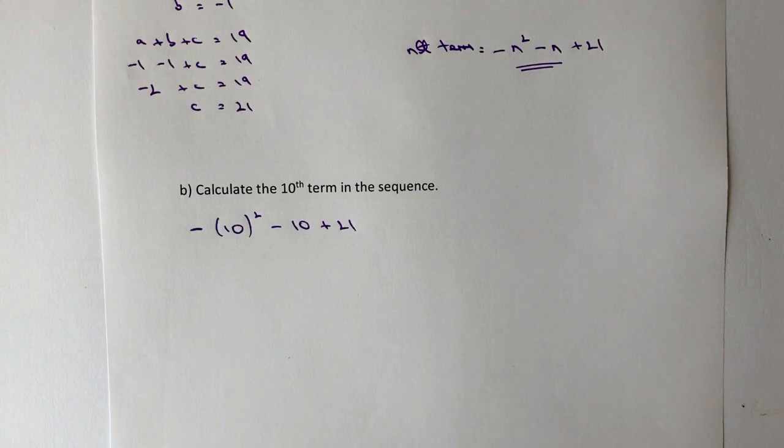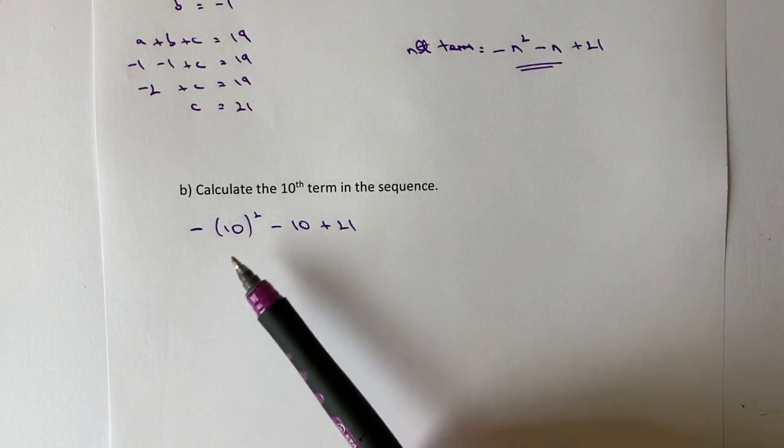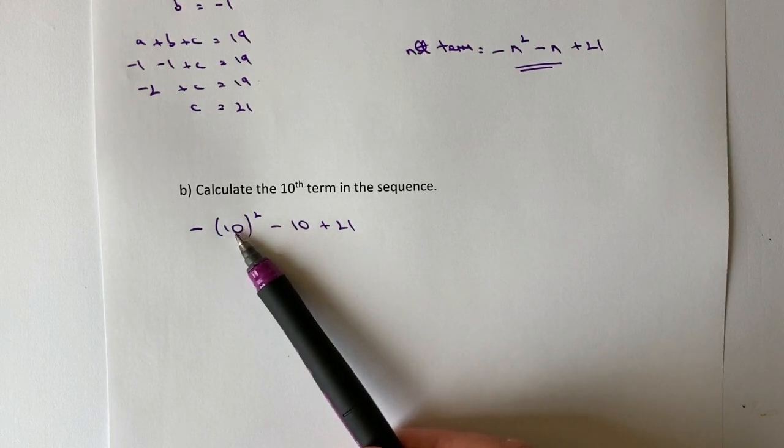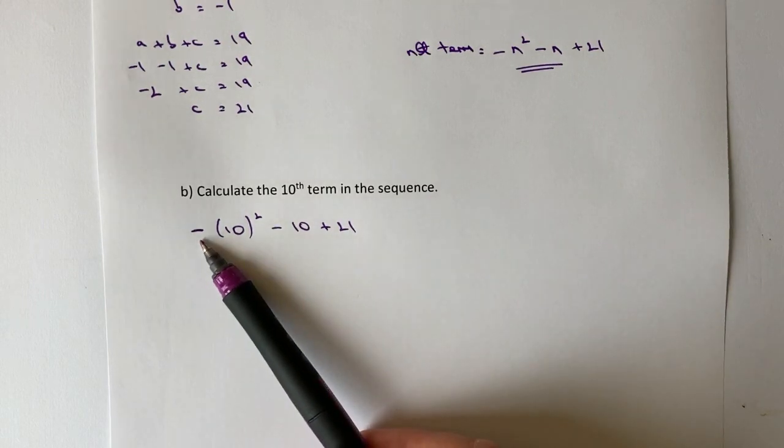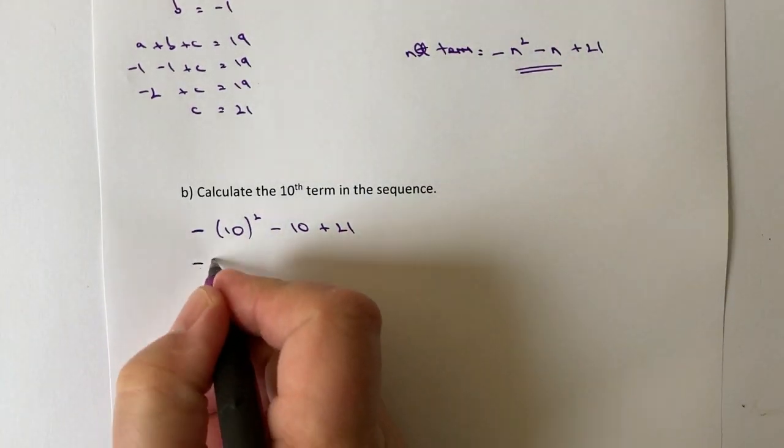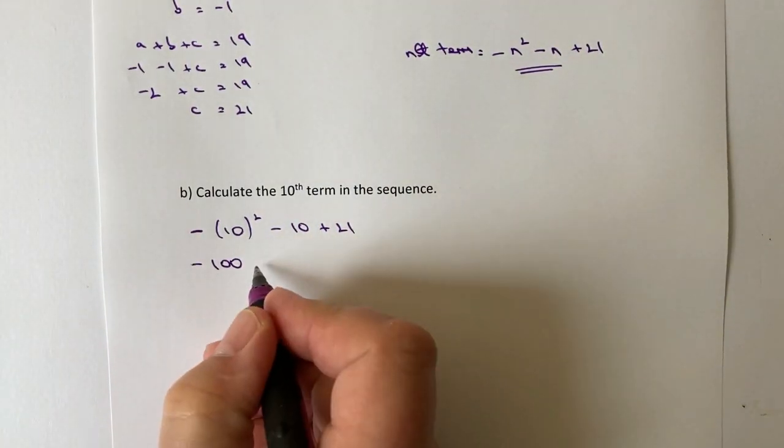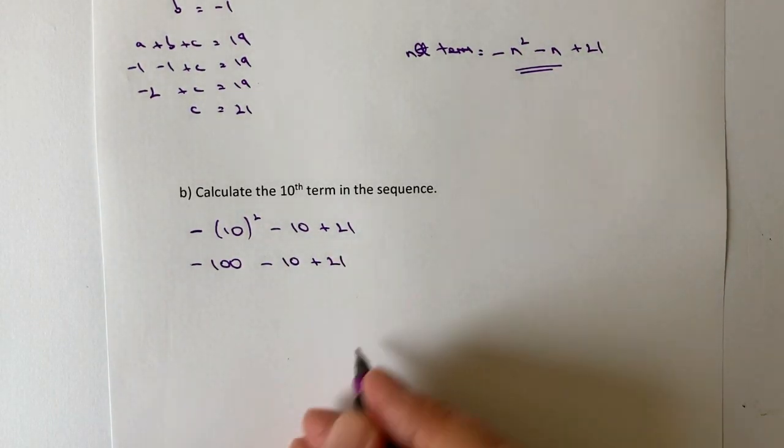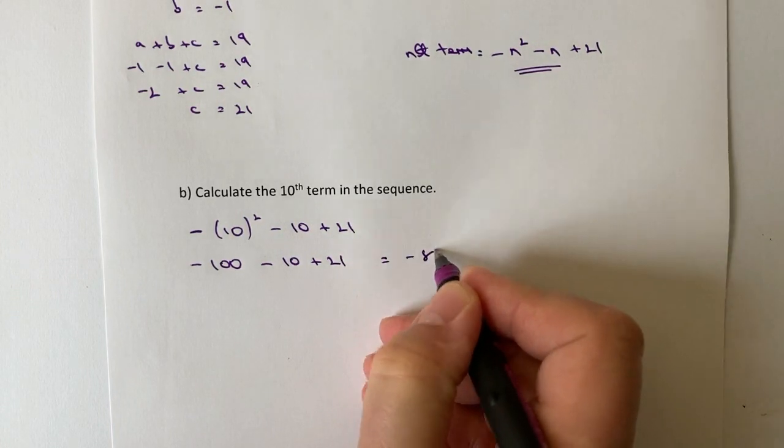So do be careful here, because we need to do the indice first. So 10 times 10 is going to be 100, 10 squared is 100. And then with a minus in front of it, it's not the same as saying minus 10 squared, it's minus in front of 10 squared. So it's a little bit tricky to kind of remember how we're going to work these things out. But we'll get minus 100 minus 10 plus 21. And I work that out, I'm going to get minus 89.